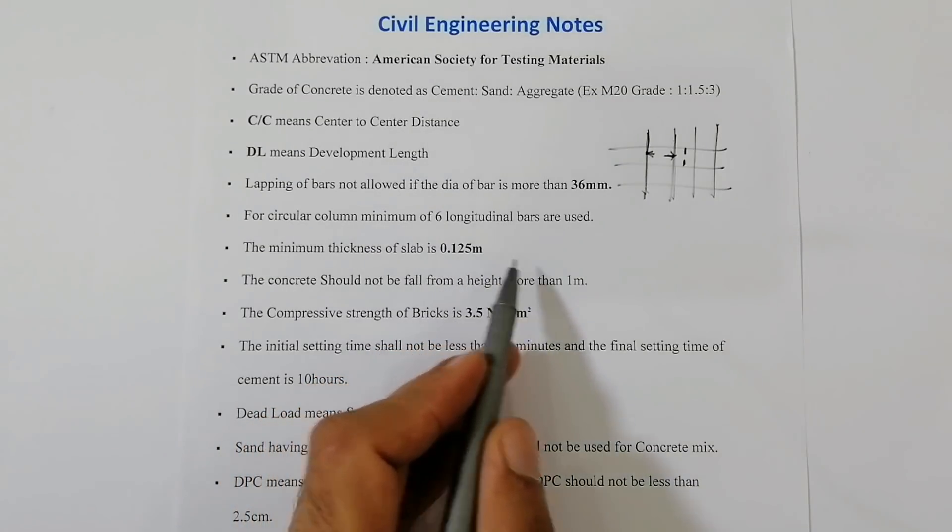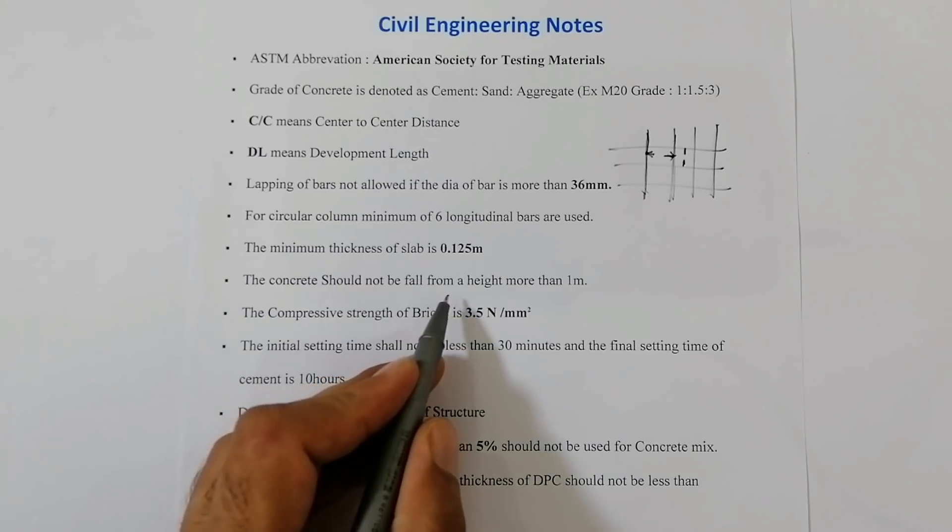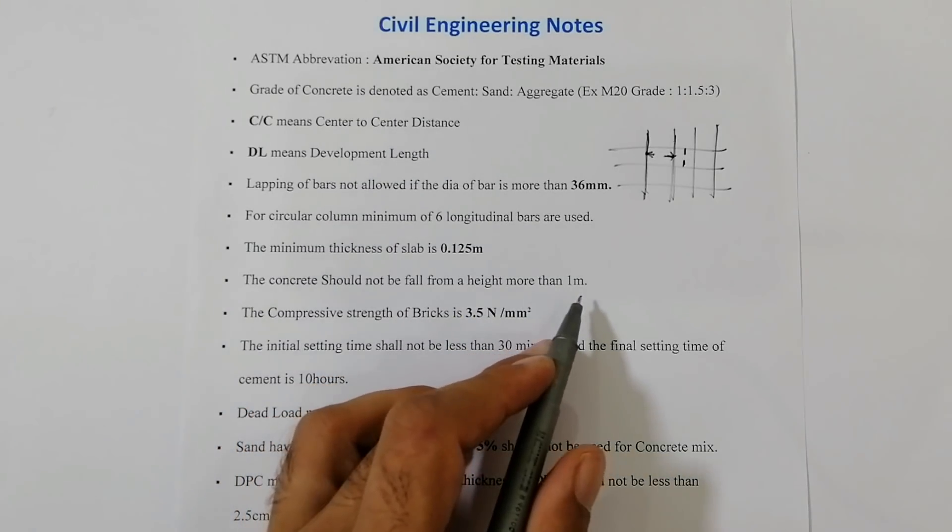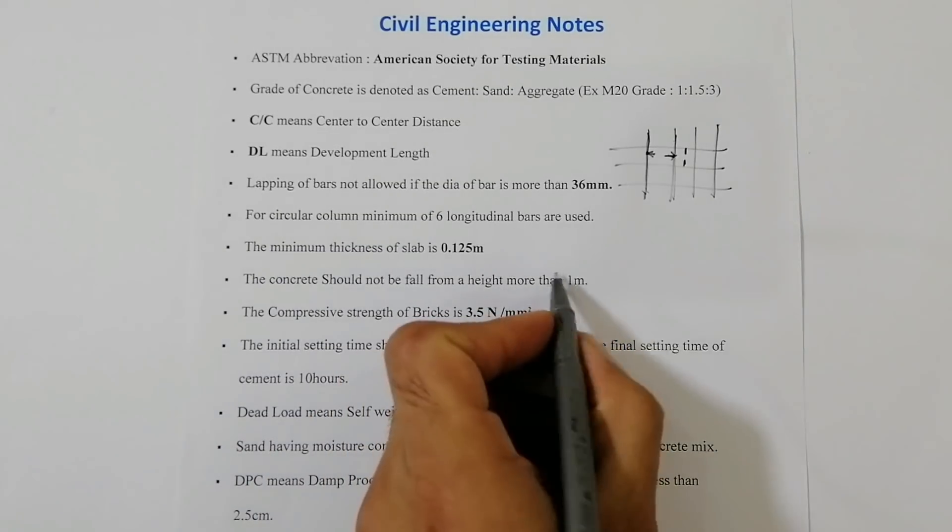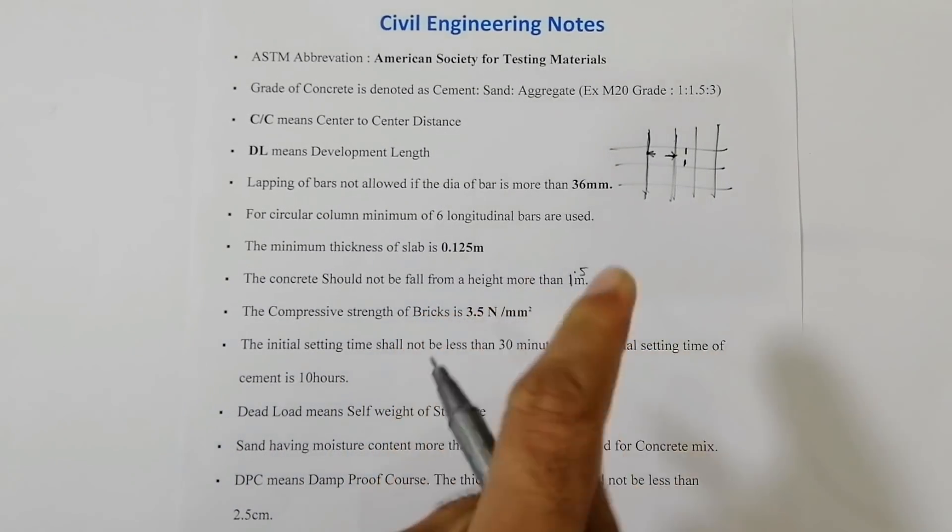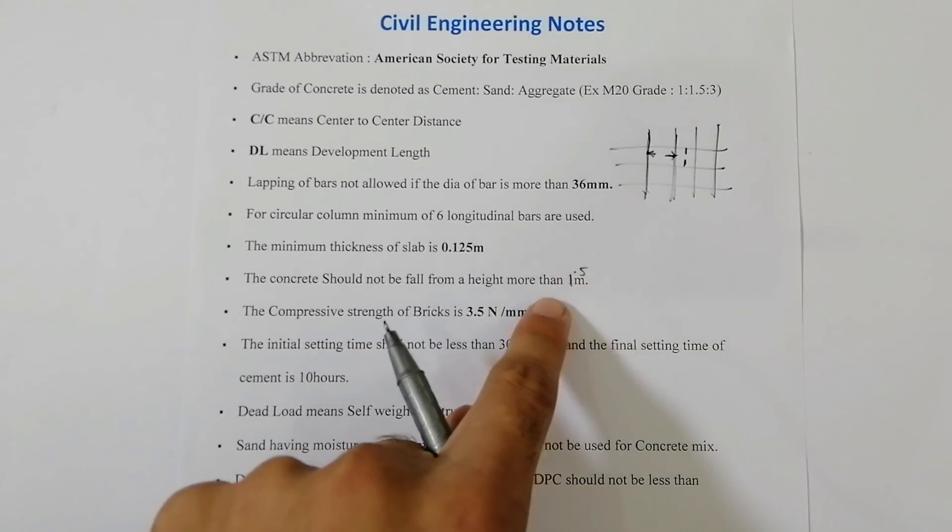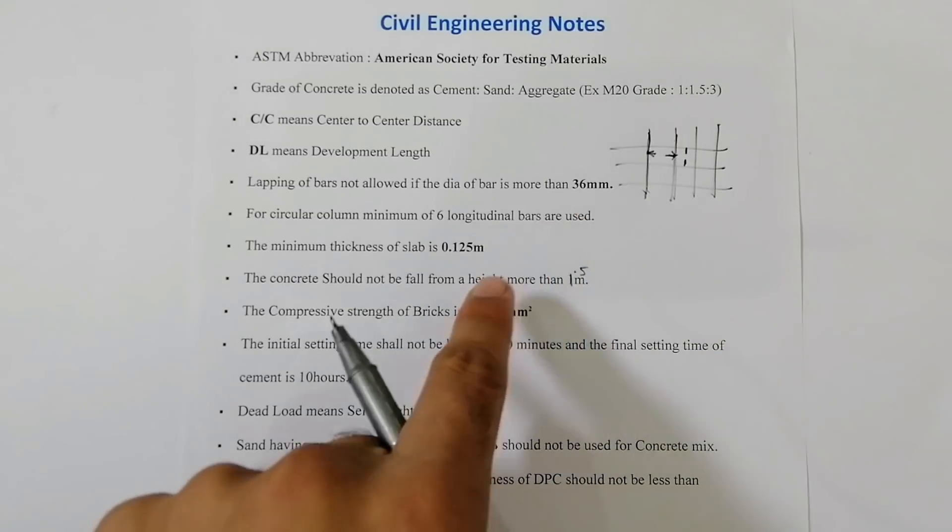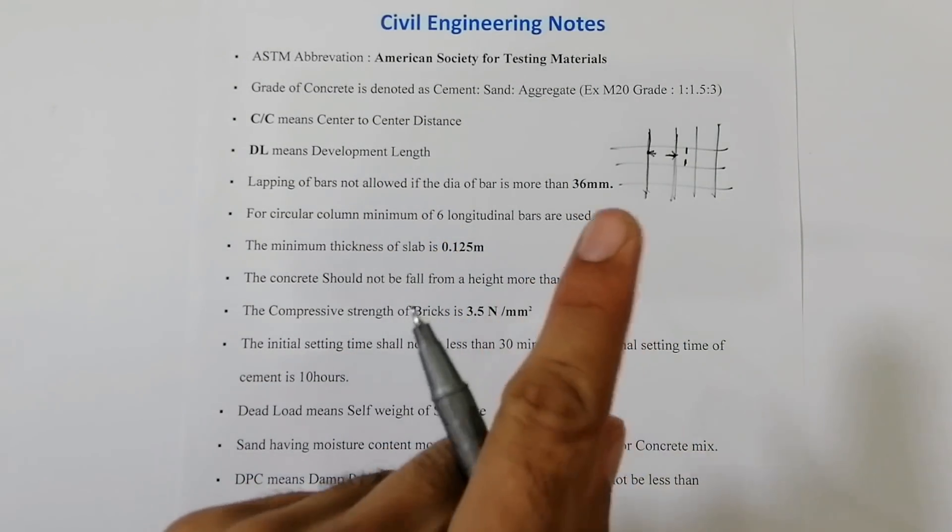The concrete should not be fall from the height of more than 1.5 meters, otherwise it will make segregation and also bleeding. Bleeding and segregation can weaken the concrete.